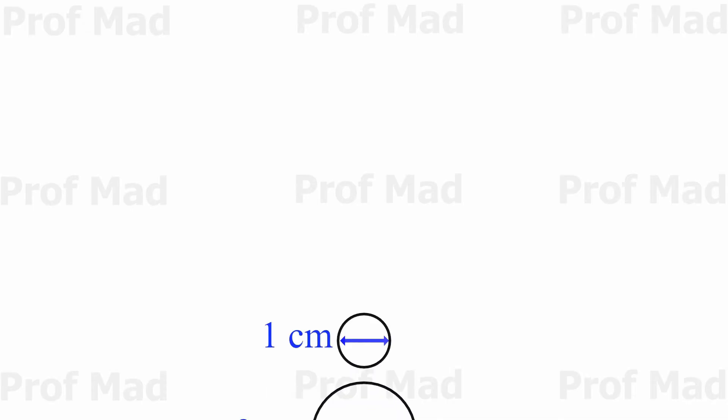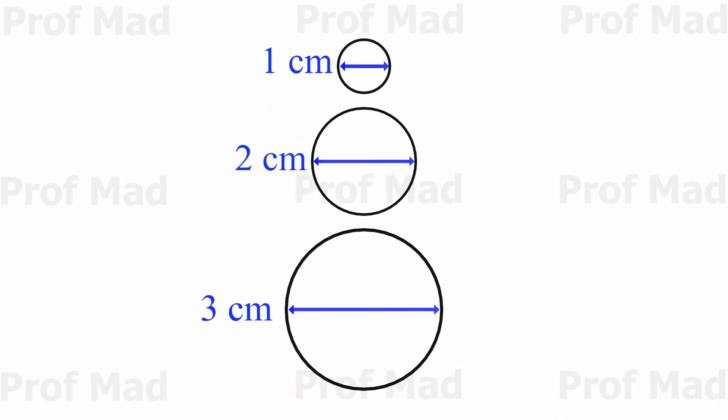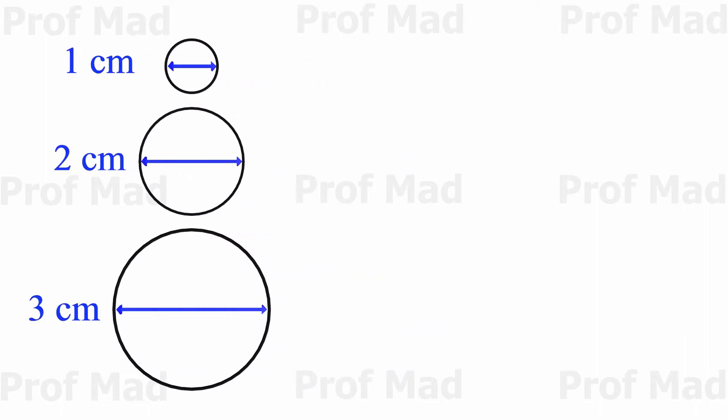Let's consider several circles with different diameters: 1 cm, 2 cm, and 3 cm. We can measure the circumference of each circle.